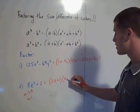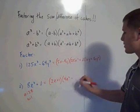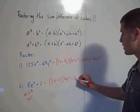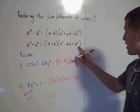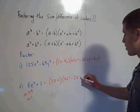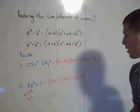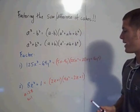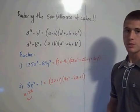which is 4z squared, minus 2z times 1, which is 2z, and then plus b squared, so 1 squared is 1. That's it. So this is how to factor the difference of cubes and the sum of cubes.